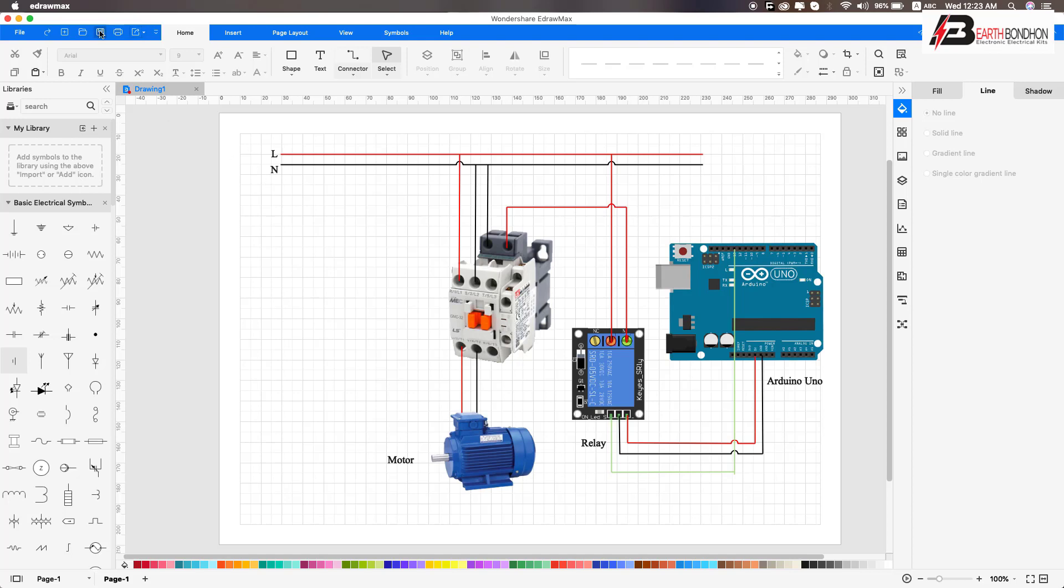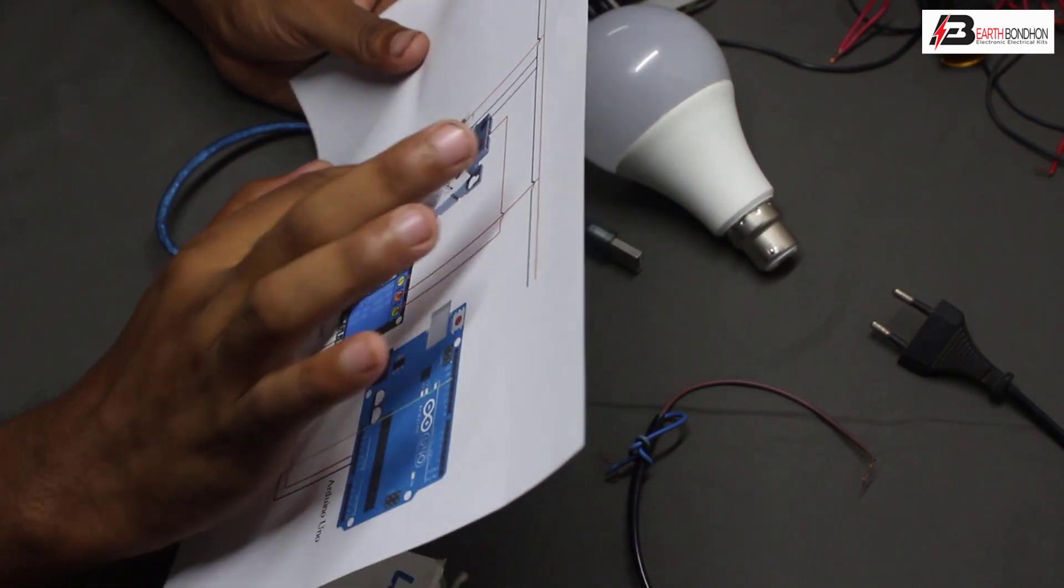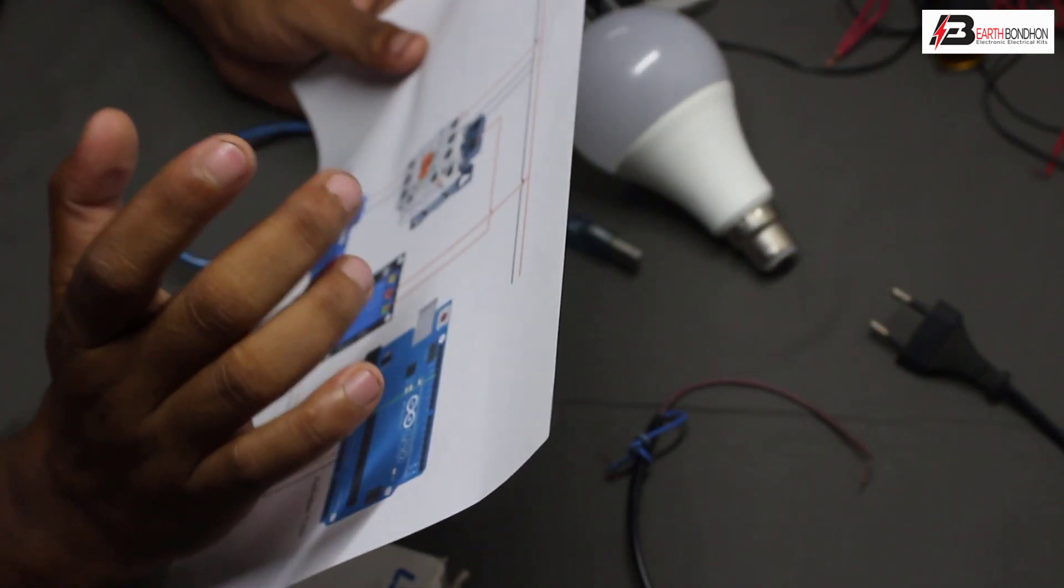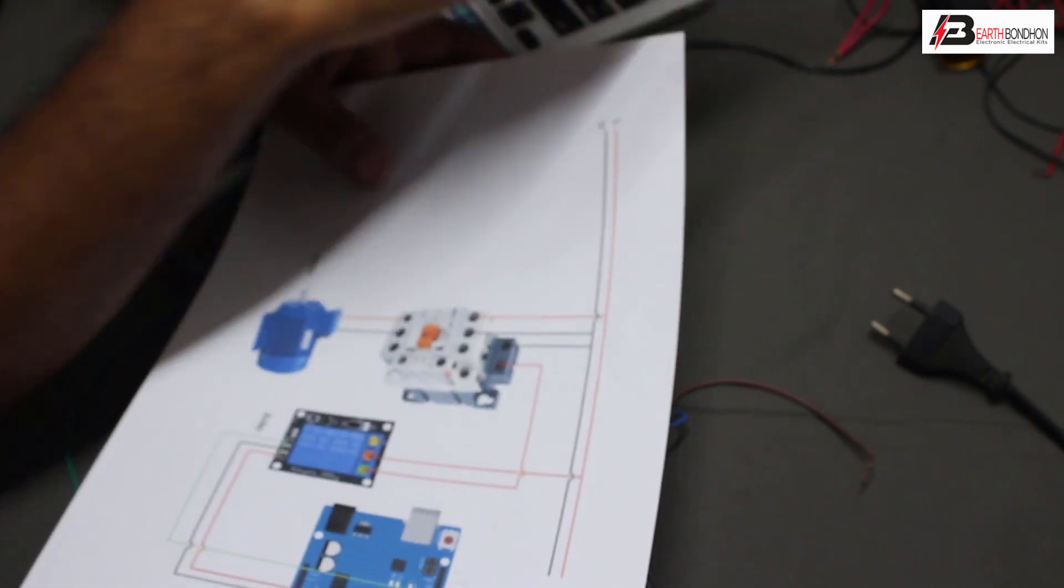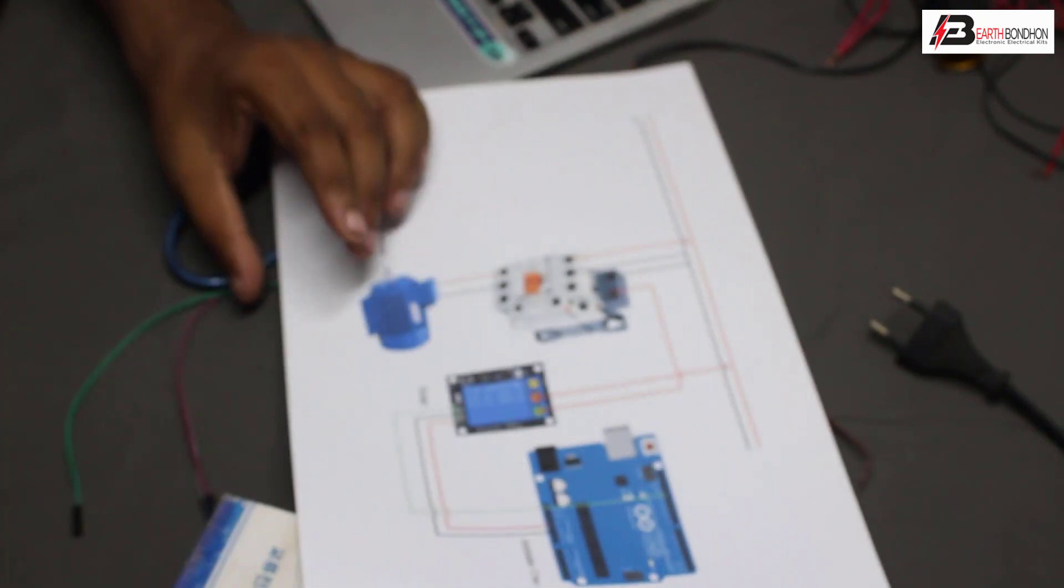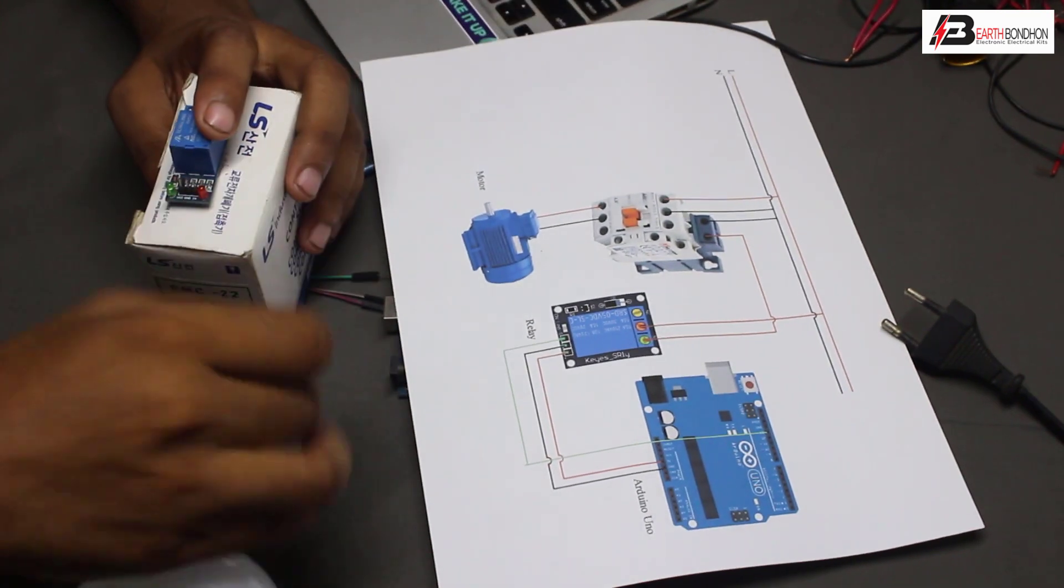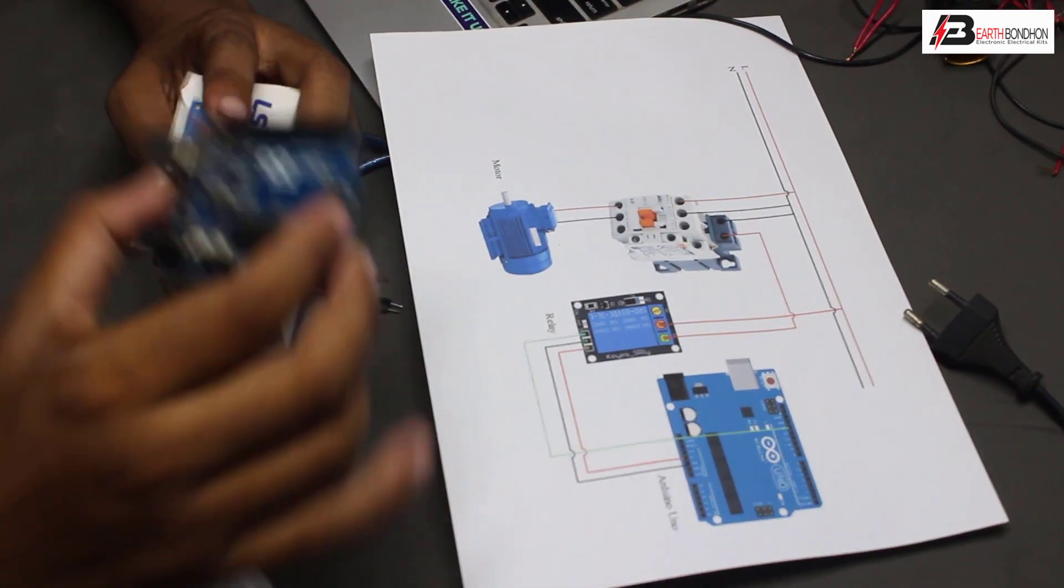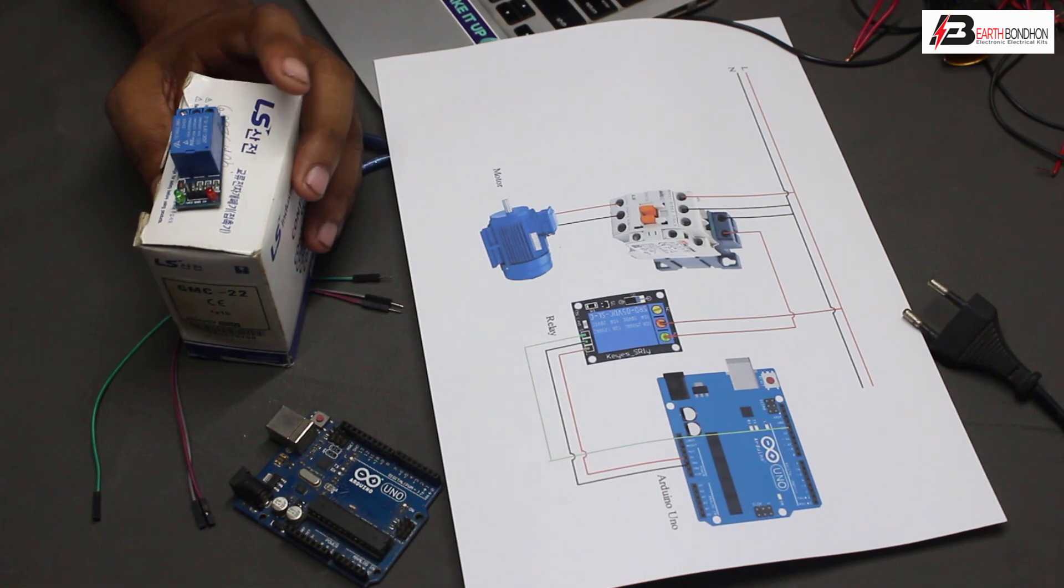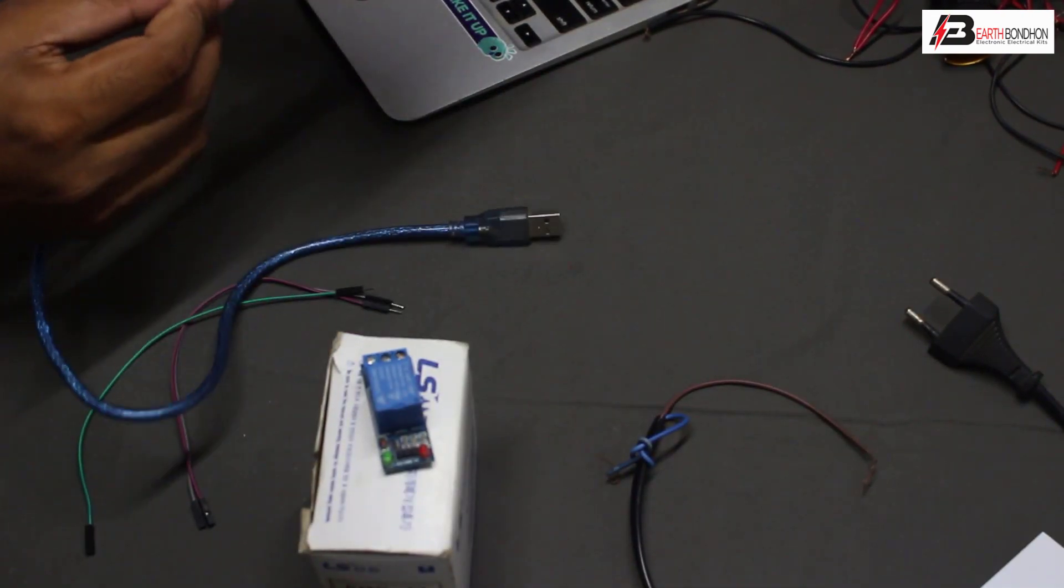Let's print out the circuit diagram. The circuit includes the Arduino board, relay, magnetic conductor, motor as the load, and LED light. The connections are the same: magnetic conductor to relay to Arduino board. First, connect the Arduino board.